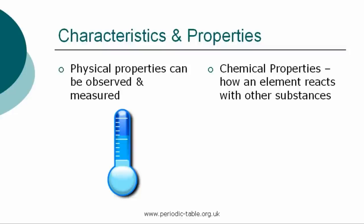Each element has physical properties that can be observed and measured, such as color, density, and odor. The chemical properties are the characteristics that determine how a substance will react with other substances, such as water or oxygen.